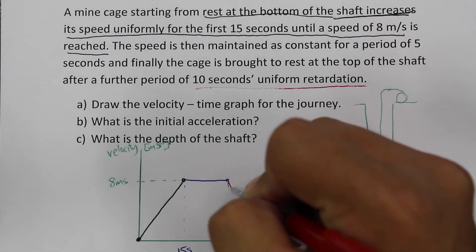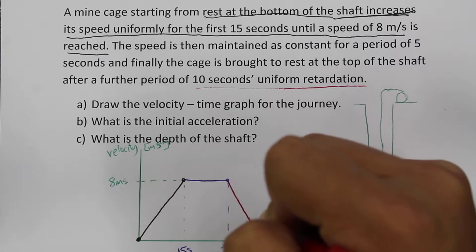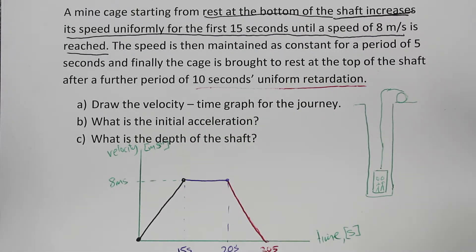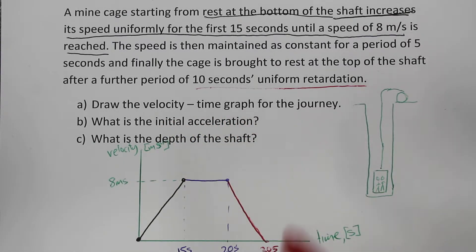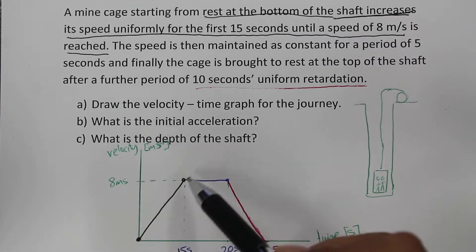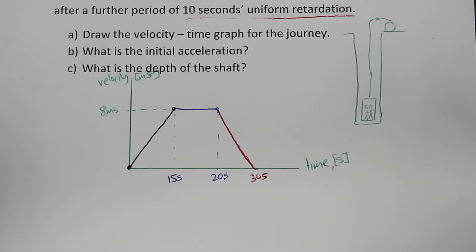During the final phase we have uniform, or constant, deceleration slowing the motion to rest. That completes the velocity versus time graph for the journey. Next we can calculate the initial acceleration, which will be the slope of the first line on the graph.